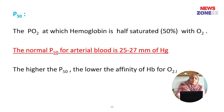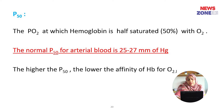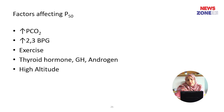What is the P50? It is the partial pressure of oxygen at which hemoglobin is half-saturated, that is 50% saturated with oxygen. The normal P50 for arterial blood is 25–27 mmHg. The higher the P50, the lower the affinity of hemoglobin for oxygen. Factors that affect P50 include: increased partial pressure of carbon dioxide, increased 2,3-bisphosphoglycerate (2,3-DPG), exercise, thyroid hormone, growth hormone, androgen, and high altitude.